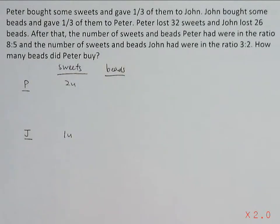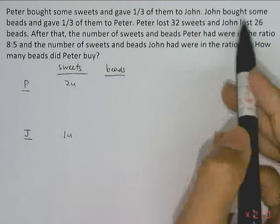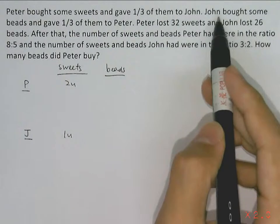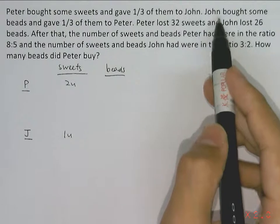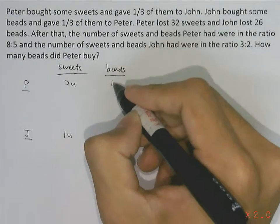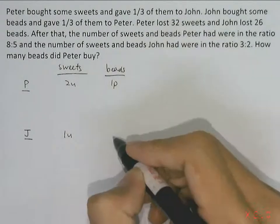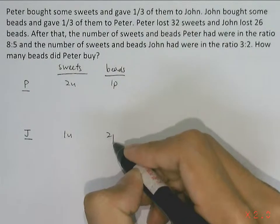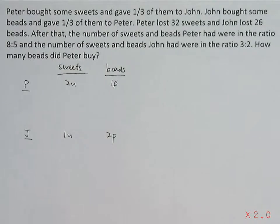We let the number of beads that John bought be 3 parts. He would then have given Peter 1 part of the beads, while keeping 2 parts of the beads for himself.